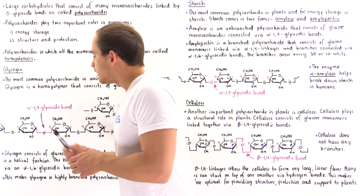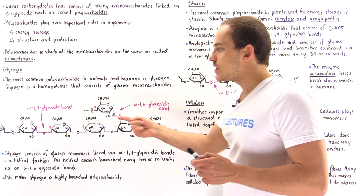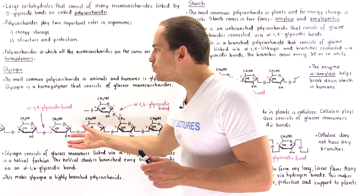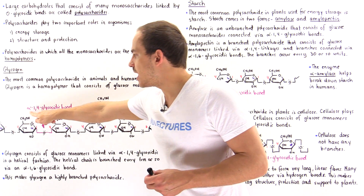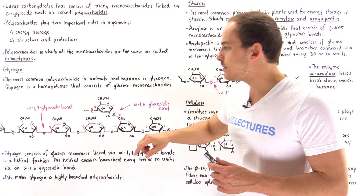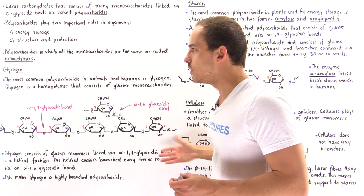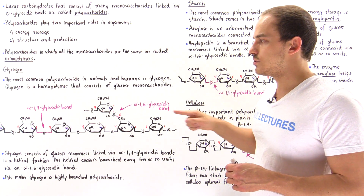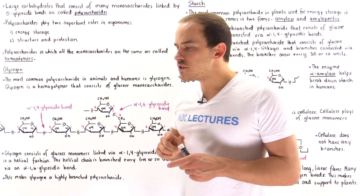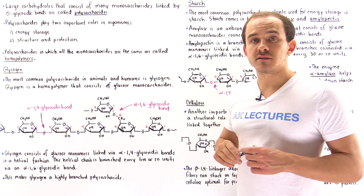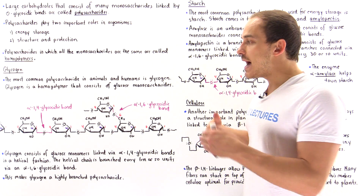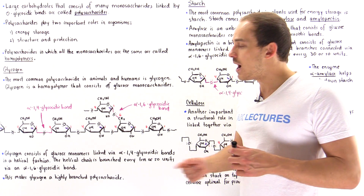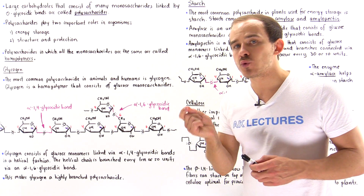As a result of the alpha-1,4 glycosidic bonds, glycogen takes on a helical structure. So even though it looks like a linear molecule, glycogen is not actually linear — it forms a helical structure. We also have alpha-1,6 glycosidic bonds, which occur about every ten or so sugars, and these serve as the branching points.